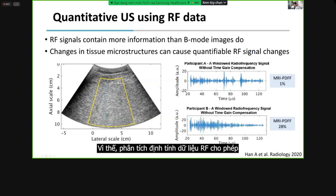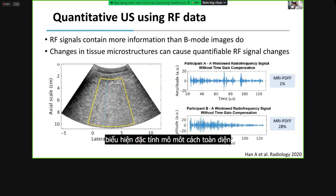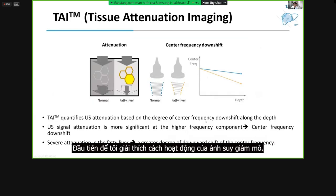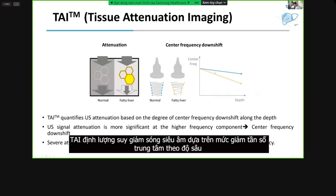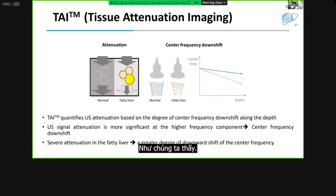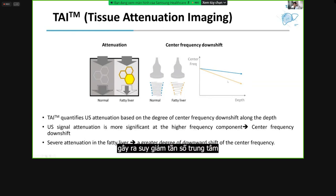Therefore, quantitative analysis of RF data allows a more comprehensive characterization of tissue compositions. As you can see in these two examples of normal and significant hepatic steatosis cases, TAI quantifies ultrasound attenuation based on the degree of center frequency downshift along the depth. As ultrasound signal attenuation is more significant at higher frequency components, center frequency shows downshift as the beam propagates in the media.